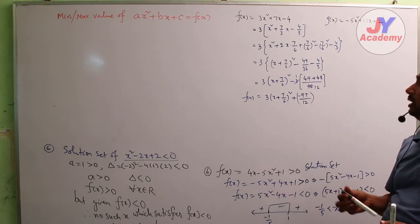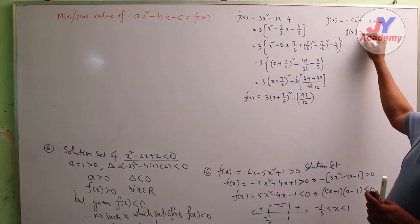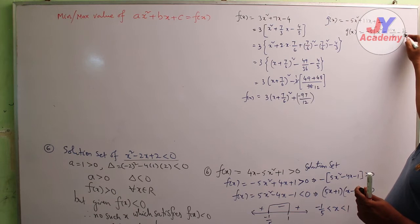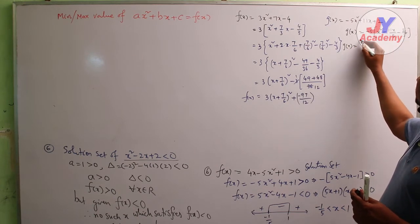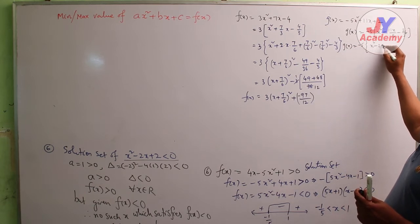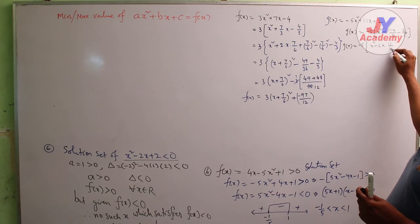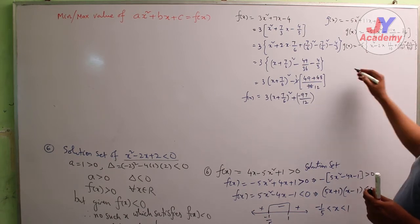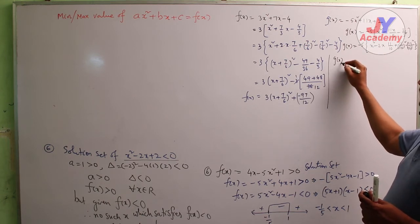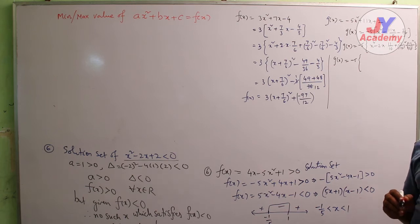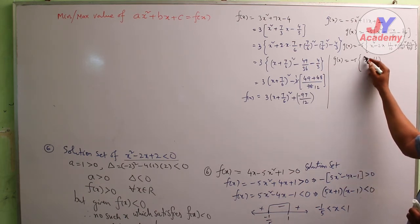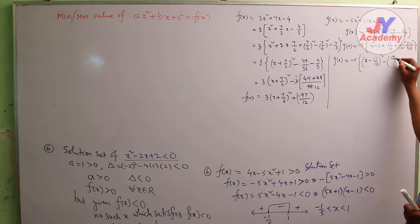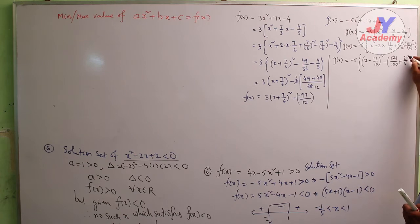Now come to the second example. g(x) is equal to minus 5 into [x² minus 2·x·(11/10) + (11/10)² minus (11/10)² minus 2/5]. So g(x) is equal to minus 5 into [x minus 11/10]² minus 121/100 plus 2/5.